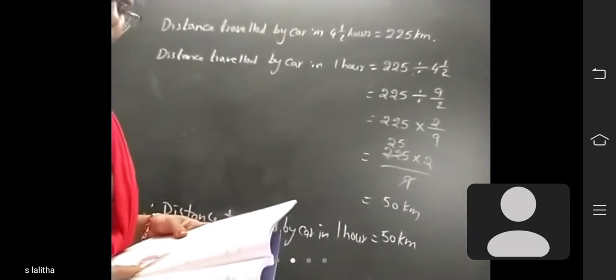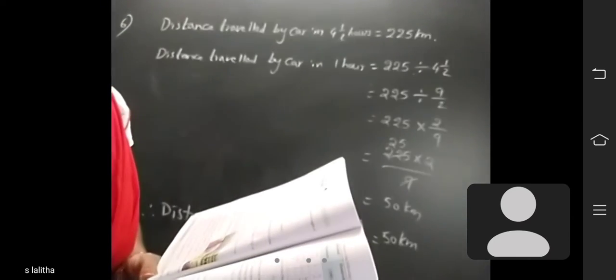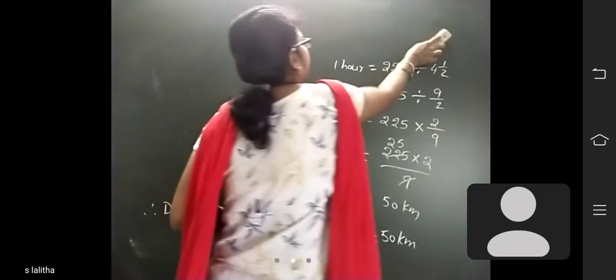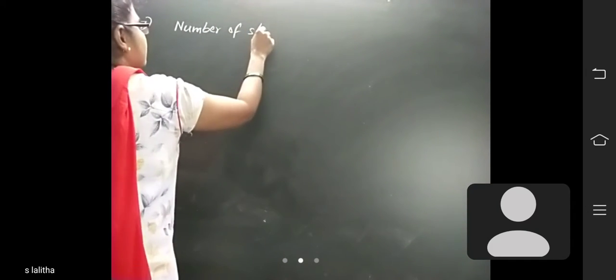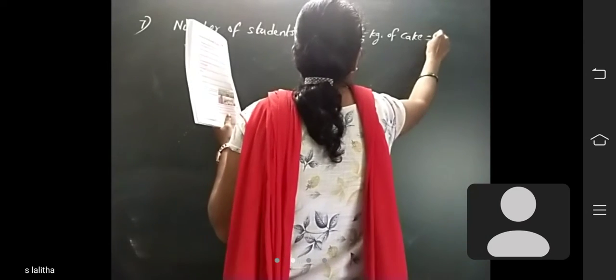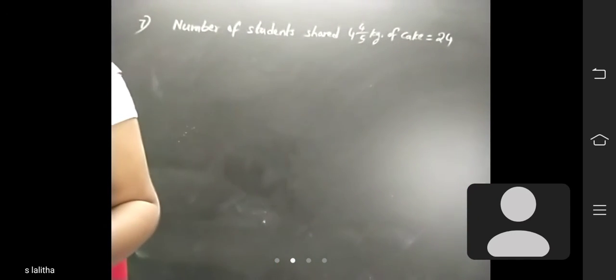Next question: If 24 students share 4 and 4 by 5 kgs of cake, then how much cake does each one get? 24 students share 4 and 4/5 kgs of cake. You have to find how much each one gets.